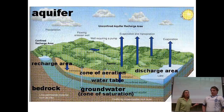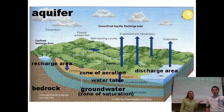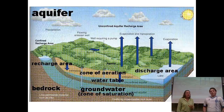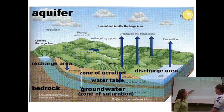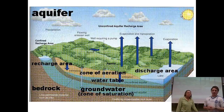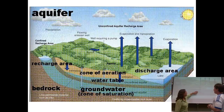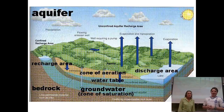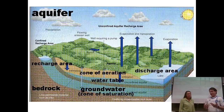Now we dive into more vocabulary. Let's find the terms we already know in this diagram: the unsaturated zone, the saturated zone, and the water table. The water table is labeled clearly here. Above it is the unsaturated zone — in this diagram it's also called the zone of aeration. Those terms mean the same thing. Below the water table you've got the groundwater, the saturated zone. We also have bedrock, which doesn't hold water — where you see blue is where it's actually filled with water.